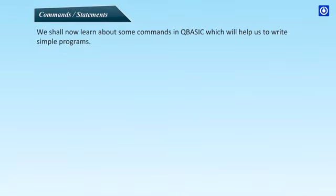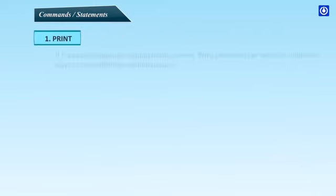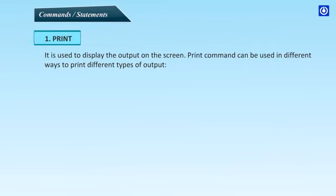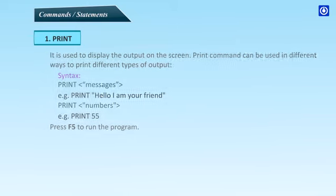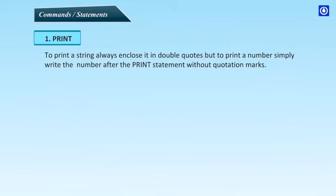Commands and statements: We shall now learn about some commands in QBasic which will help us to write simple programs. Print: It is used to display the output on the screen. Print command can be used in different ways to print different types of output. Syntax: Print messages. Example: Print "Hello, I am your friend". Print numbers. Example: Print 55. To print a string always enclose it in double quotes, but to print a number simply write the number after the print statement without quotation marks.